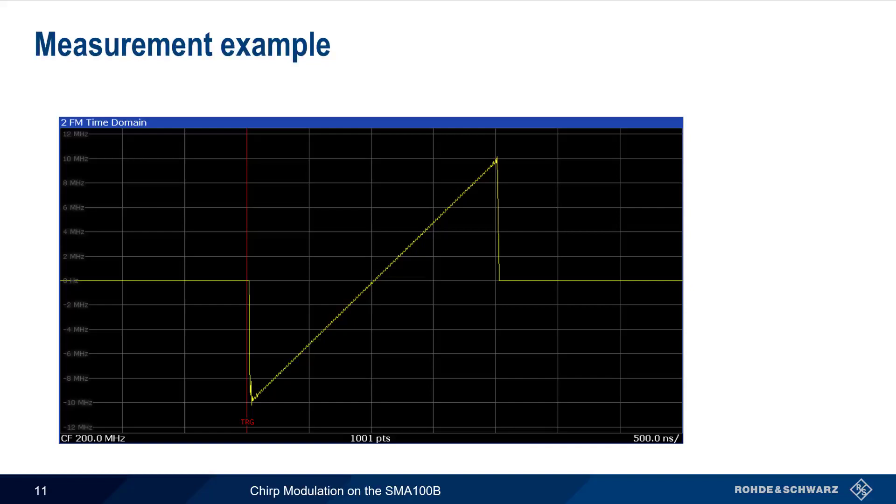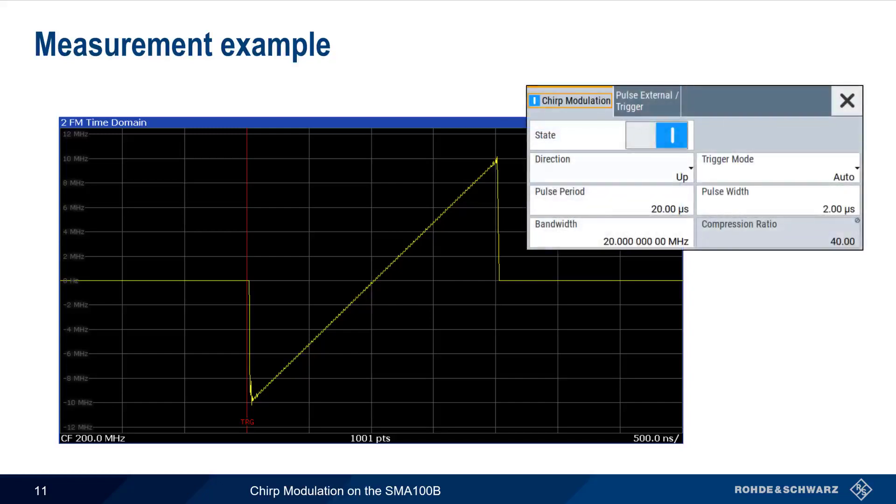If we use the analog demodulation function of a spectrum analyzer to look at our pulses, we can see and measure the linear FM or chirp modulation. In this example, we've configured an upchirp on a pulse with a bandwidth of 20 MHz, and our pulse is 2 microseconds wide.